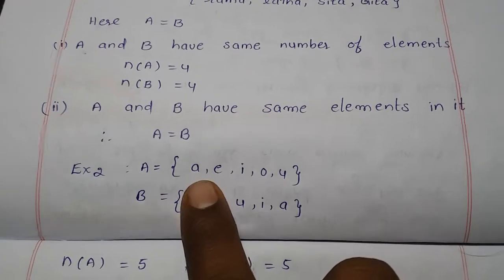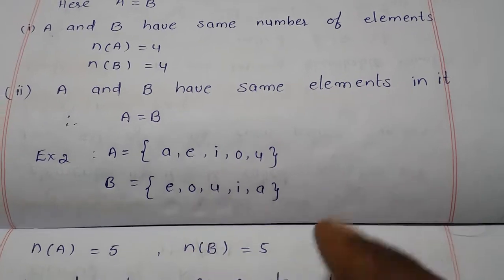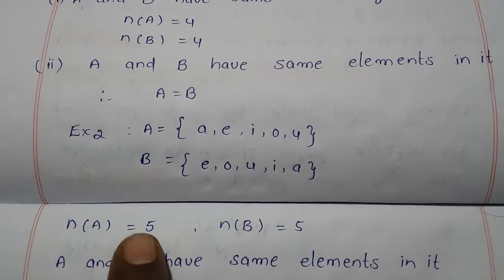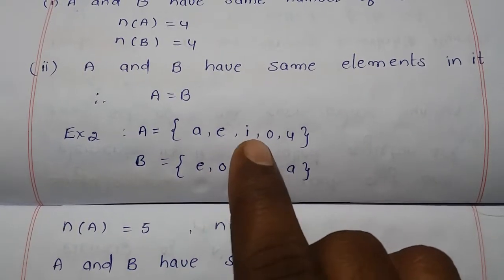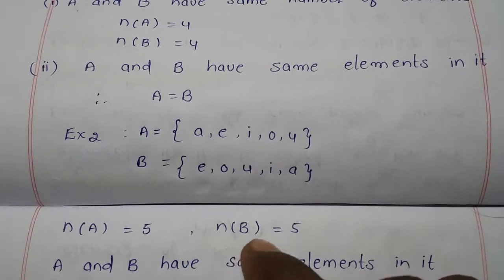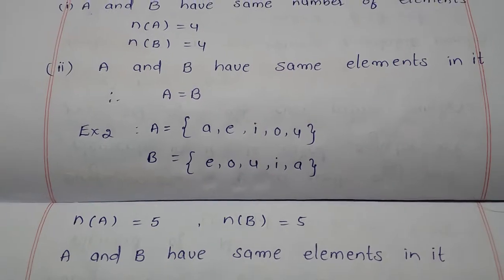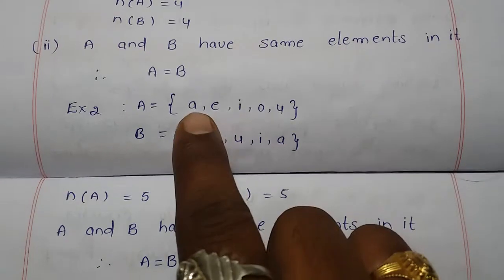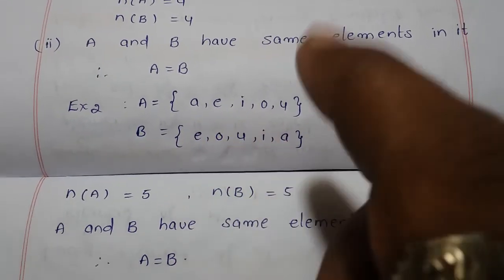Example 2: A = {a, e, i, o, u} and B = {e, o, u, i, a}. The number of elements in set A, n(A), is 5, and n(B) is also 5. Both sets contain the same number of elements and the same elements — a, e, i, o, u — therefore A is equal to B.